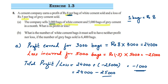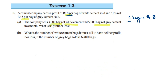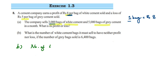Now let me move to the second question, which is a little different. The second question asks: what is the number of white cement bags the company must sell to have neither profit nor loss, if the number of grey bags sold is 6,400? Since we don't know the number of white cement bags, we assume it to be x. So number of white cement bags equals x.